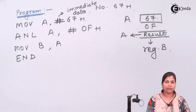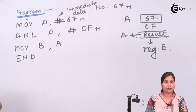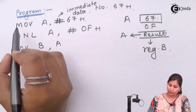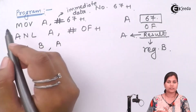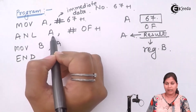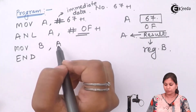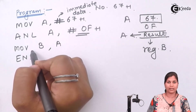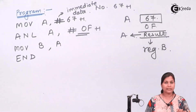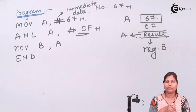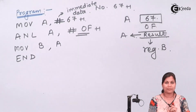After storing the result in register B, the final instruction is END. END is always written at the end of every 8051 program because it indicates that the program has terminated — no instruction written after END will be executed. So in summary: load the number into the accumulator, AND it with 0Fh to mask the upper nibble, move the result to register B, and end the program. This is the assembly language program for the 8051 microcontroller to mask the upper nibble of a number.